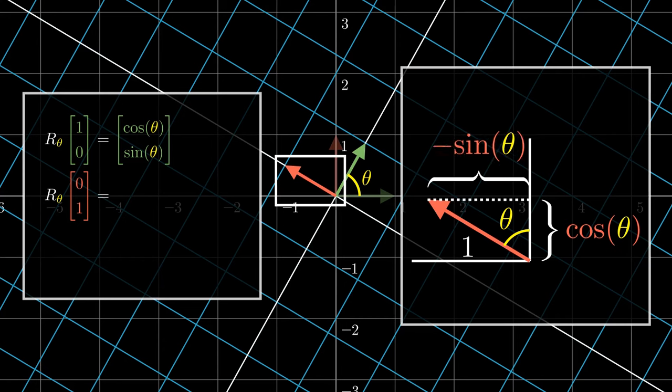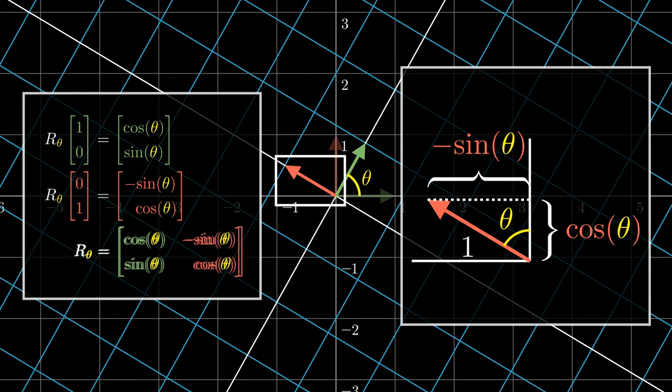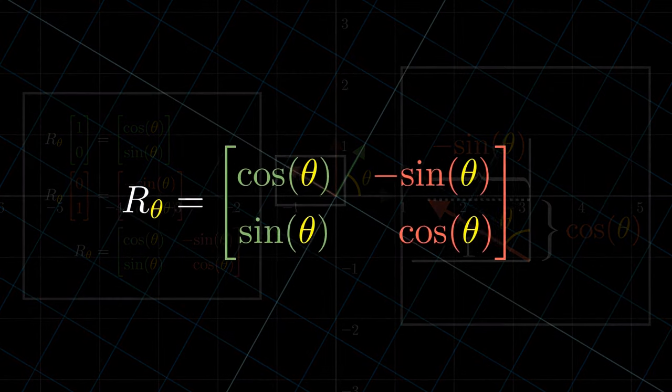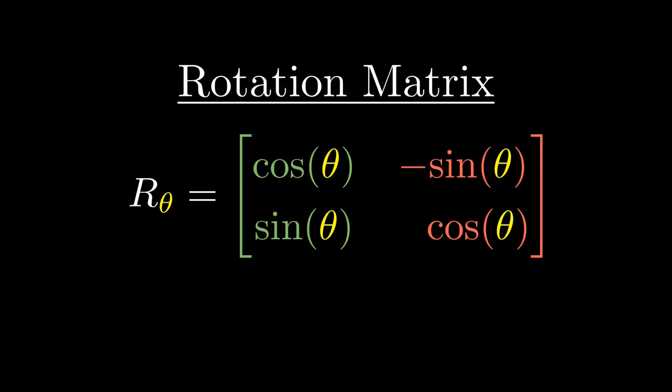This tells us the final position of the red vector after the rotation. The full rotation matrix is the combination of these results. For the first column, we can think of it as cooking up the first dish, giving us cosine of theta and sine of theta respectively. The second column can be thought of as creating the second dish, whose result is the negative of sine theta, cosine of theta respectively. This is the famous matrix representation of a rotation by theta radians in the anti-clockwise direction.